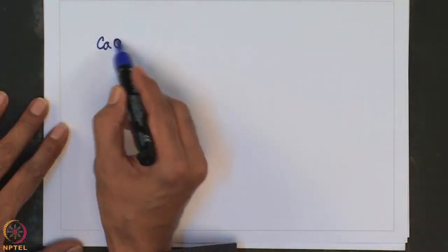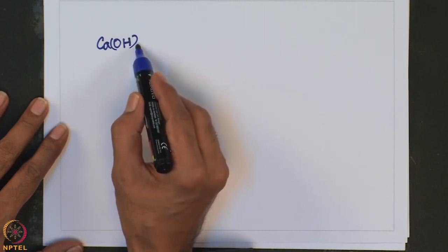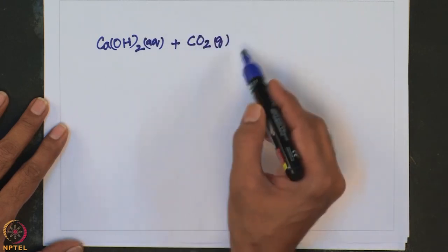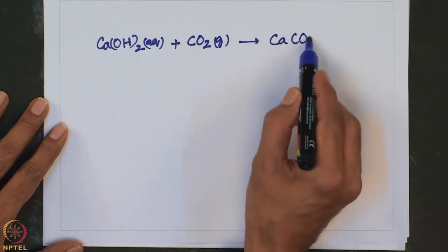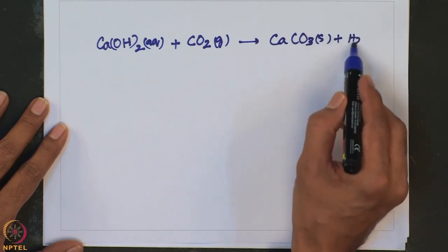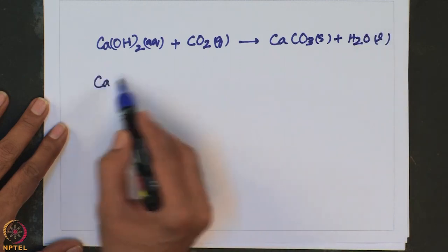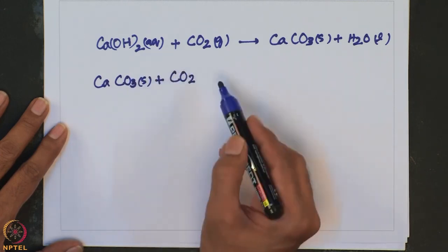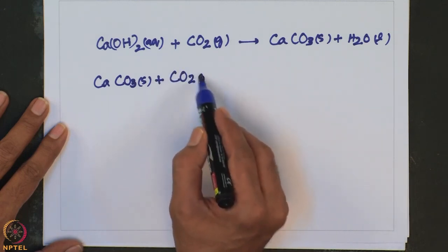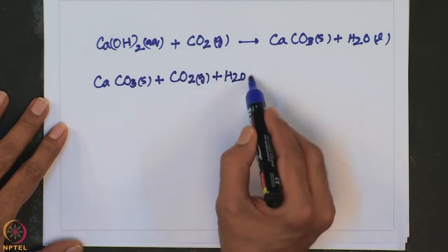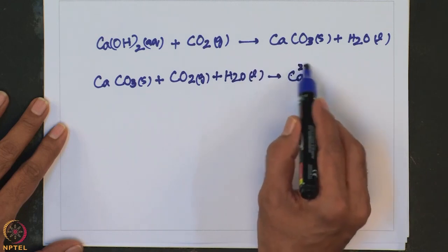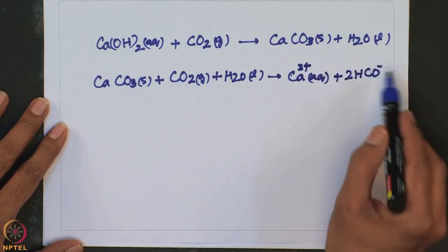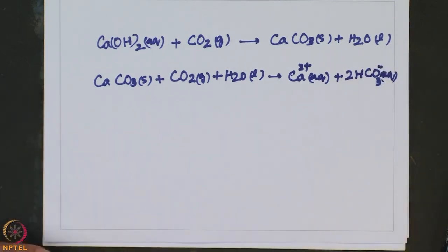The white precipitate of calcium carbonate then disappears on further reaction with carbon dioxide to form calcium hydrogen carbonate. Calcium hydroxide in aqueous medium, treated with carbon dioxide, forms calcium carbonate plus water. Similarly, calcium carbonate treated with CO2 leads to the formation of calcium hydrogen carbonate.